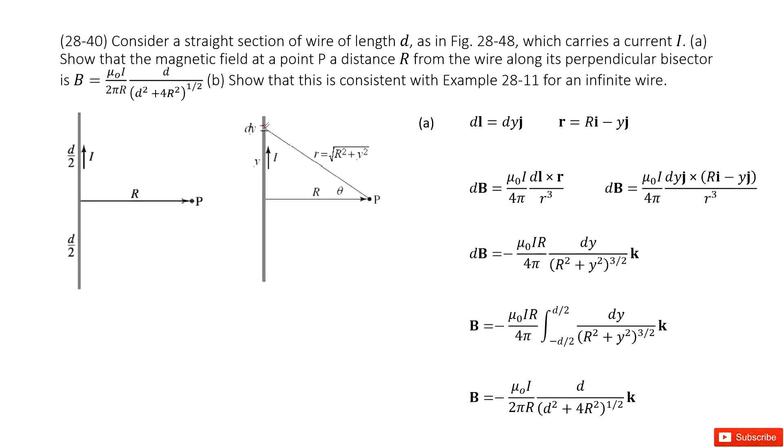And r is the distance vector from dy to P. This is the x component: r i component minus y j component. Therefore we input dl and r, we get the function that looks like this one. You can see j cross i is negative k and j cross j is zero.